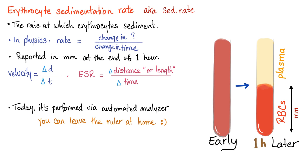I've talked about ESR in a previous video, so today just a quick review. Erythrocyte sedimentation rate is the rate at which erythrocytes sediment. In physics, any rate is a change in something over change in time — so time is always in the denominator. Same thing in ESR: distance over change in time. That's why we report it in one hour and two hours. It's now performed using an automated analyzer.